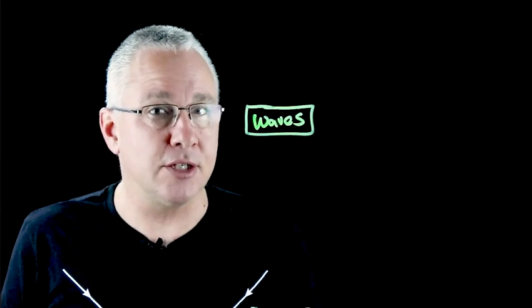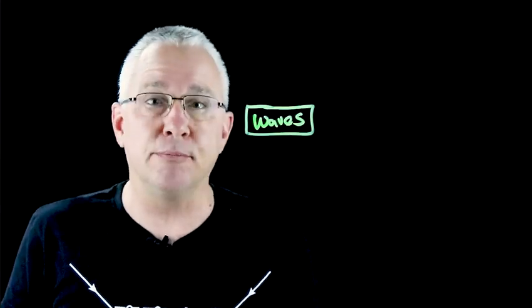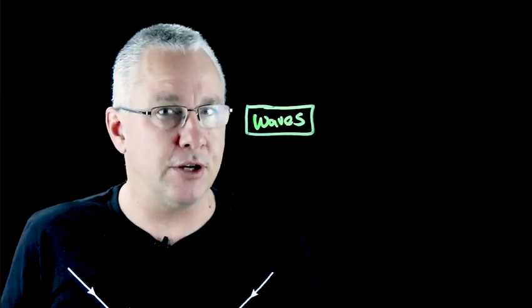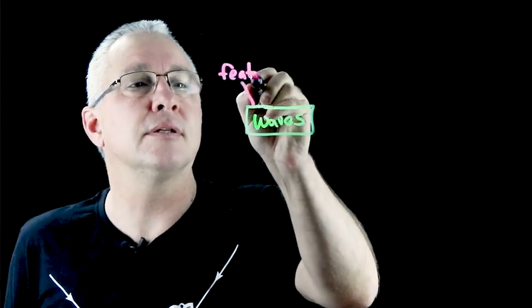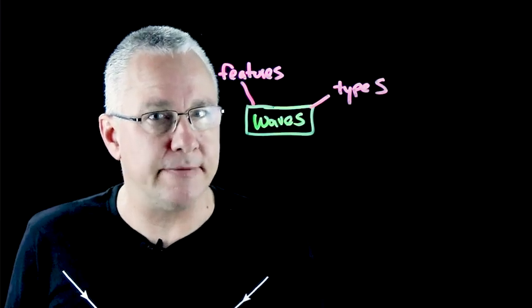A wave is in essence a disturbance that is traveling, usually through a medium, which is moving energy from point A to point B. We're going to be looking at three different aspects of waves. The first is the features, we're also going to be looking at the types, and lastly we're going to be looking at the behaviors.